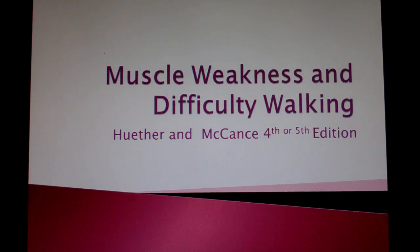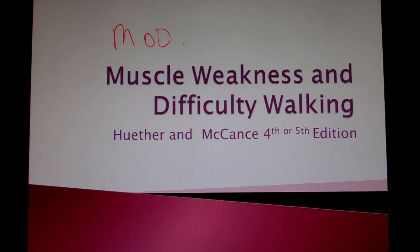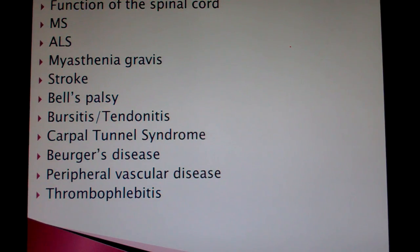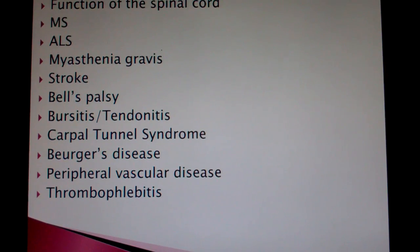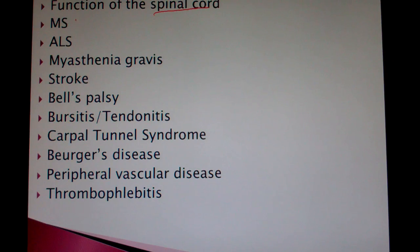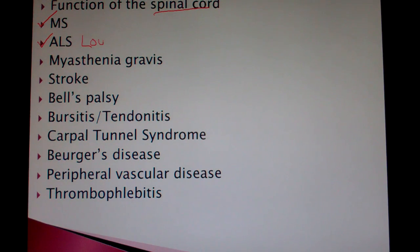Welcome to Part 1 of Muscle Weakness and Difficulty Walking. This is Module 13, Part 1. We're going to see things that have to do with muscle weakness and difficulty walking, and the spinal cord has to be involved in that. We'll look at some of the function of the spinal cord, as well as serious diseases like multiple sclerosis and amyotrophic lateral sclerosis, also known as Lou Gehrig's disease.